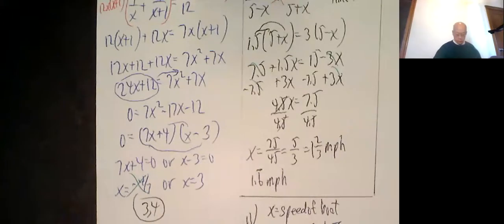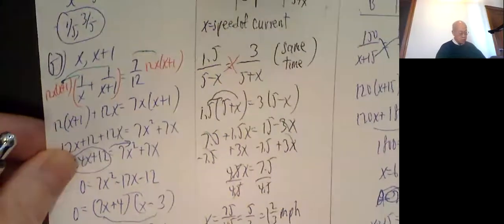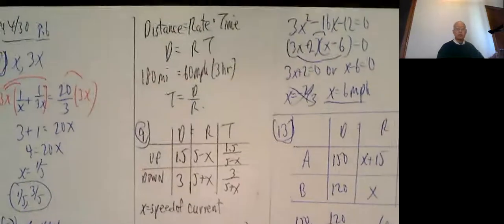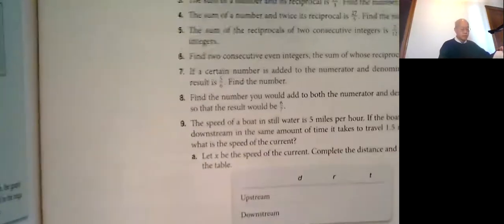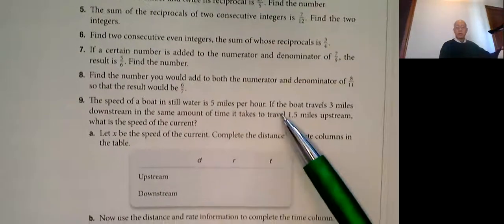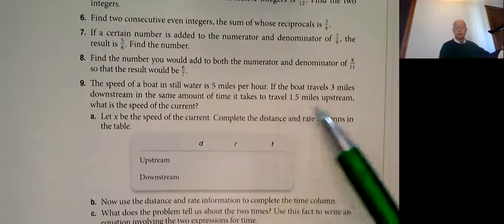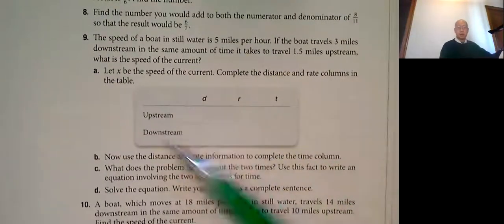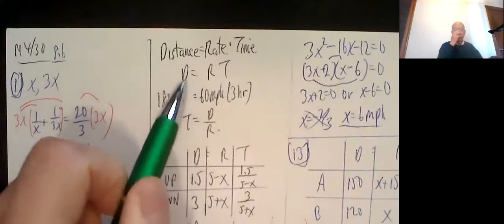Then the next one I'm going to show you was problem number 9. You have to use the formula that distance equals rate times time. So problem number 9: The speed of a boat in stillwater is 5 miles per hour. When the boat travels 3 miles downstream in the same amount of time as it takes to travel 1.5 miles upstream, what is the speed of the current? And we're asked to solve all the information here and make a little chart. So I made a chart here.